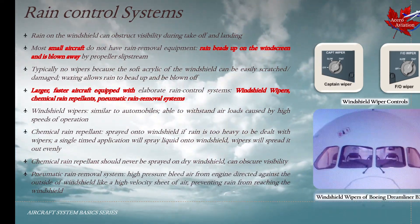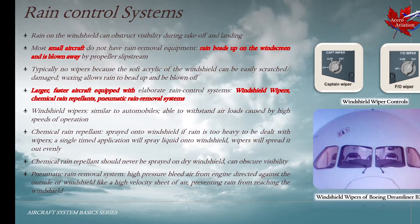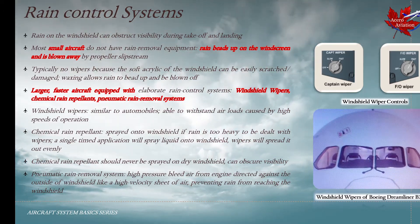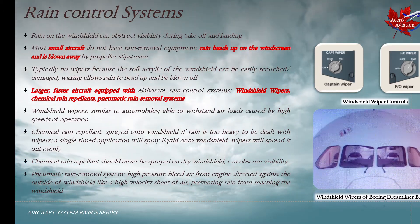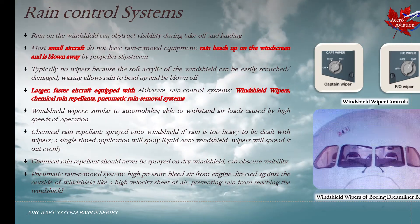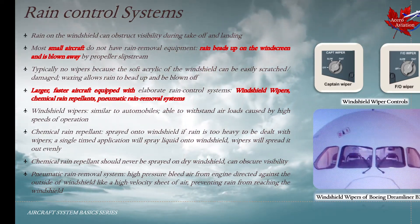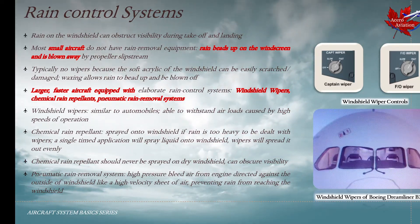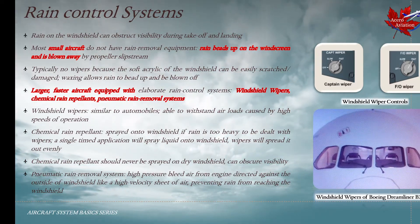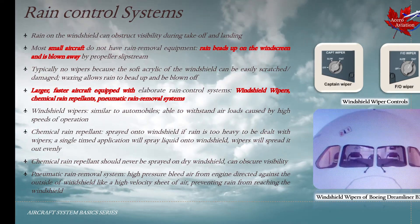Pneumatic rain removal systems use high-pressure bleed air from the engine directed against the outside of the windshield like a high-velocity sheet of air. This prevents rain from reaching the windshield at all.